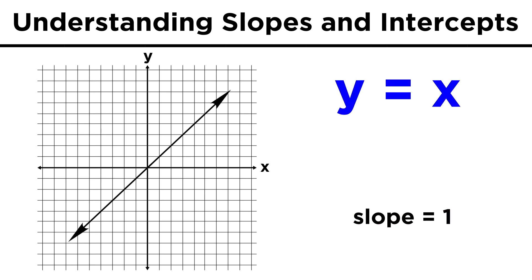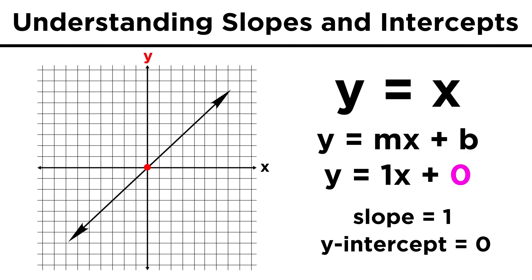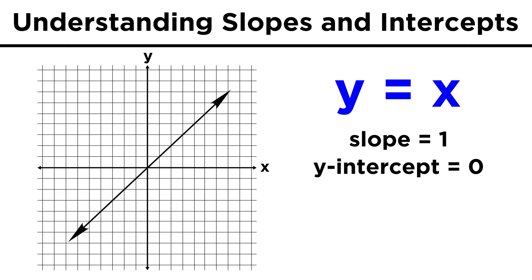That should make sense, because y equals x is in y equals mx plus b form. It's just that m is one, and b is zero. One x is just x, and b is zero, because the line crosses the y axis when y equals zero, so we get this very simple equation, y equals x.